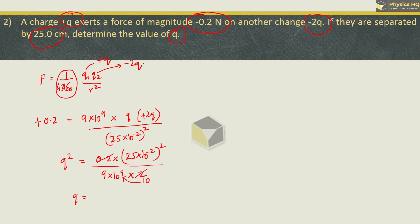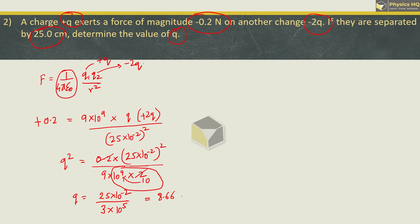Taking the square root: the root of (25×10⁻²)² gives 25×10⁻², the root of 9 is 3, and the root of 10¹⁰ is 10⁵. So we get Q equal to 25 by 3 times 10⁻⁷, which is 8.66×10⁻⁷ coulomb.